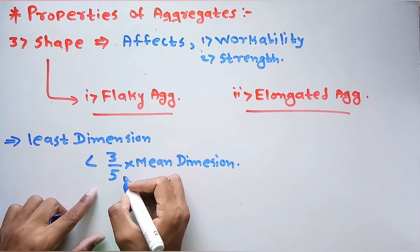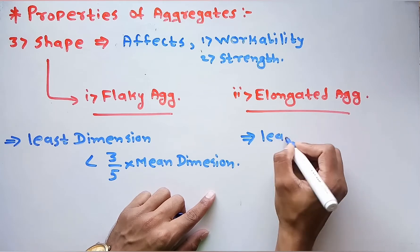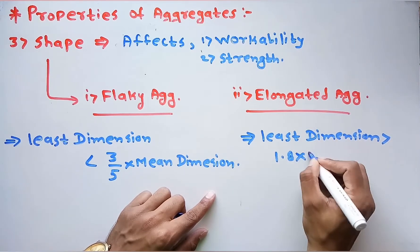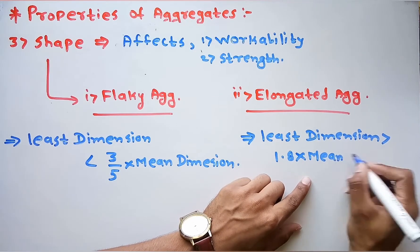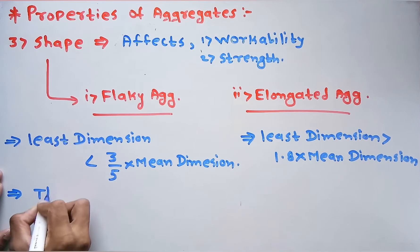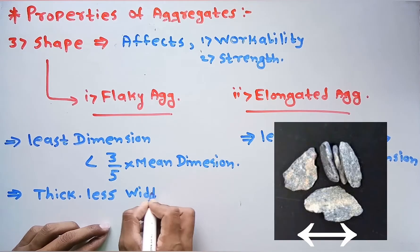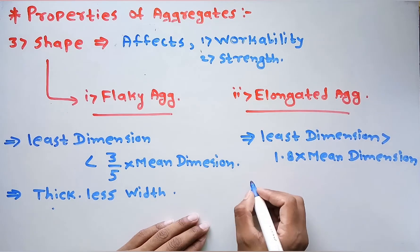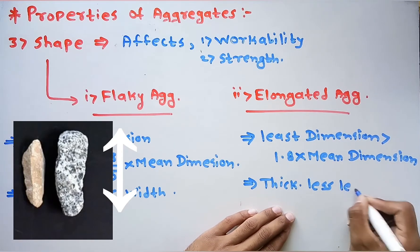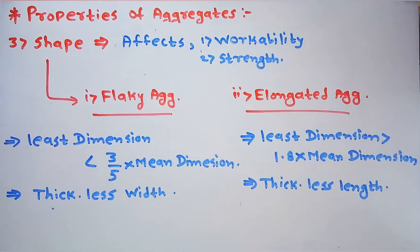When that condition is satisfied, the aggregate is termed a flaky aggregate. For elongated aggregate, the length should be greater than 1.8 times its mean dimension. In flaky aggregates, the thickness is less compared to its width. In elongated aggregates, the thickness is also less but it is compared to its length. This is the basic difference between flaky and elongated aggregates.